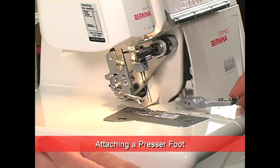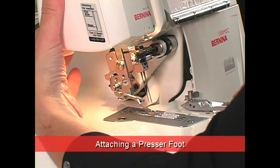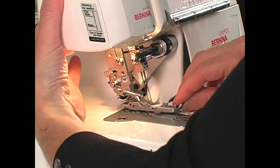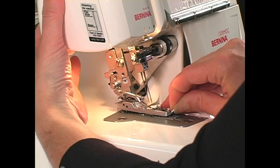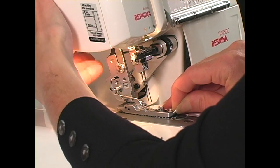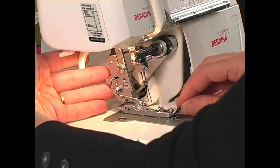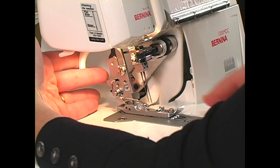To secure your accessory foot to your overlock, raise the presser foot lifter, slide the foot underneath the clamp, and release the presser foot lifter. Push on the catch, and the presser foot is secured.